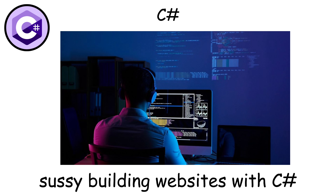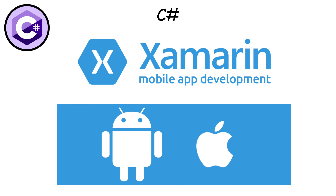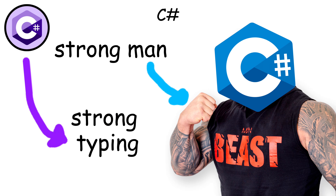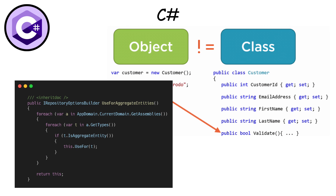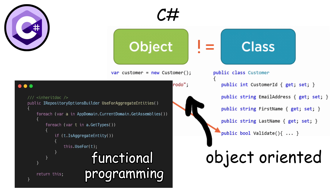C-sharp also works great for web development through ASP.NET and mobile apps with Xamarin. The language has strong typing, automatic memory management through garbage collection, and supports both object-oriented and functional programming.